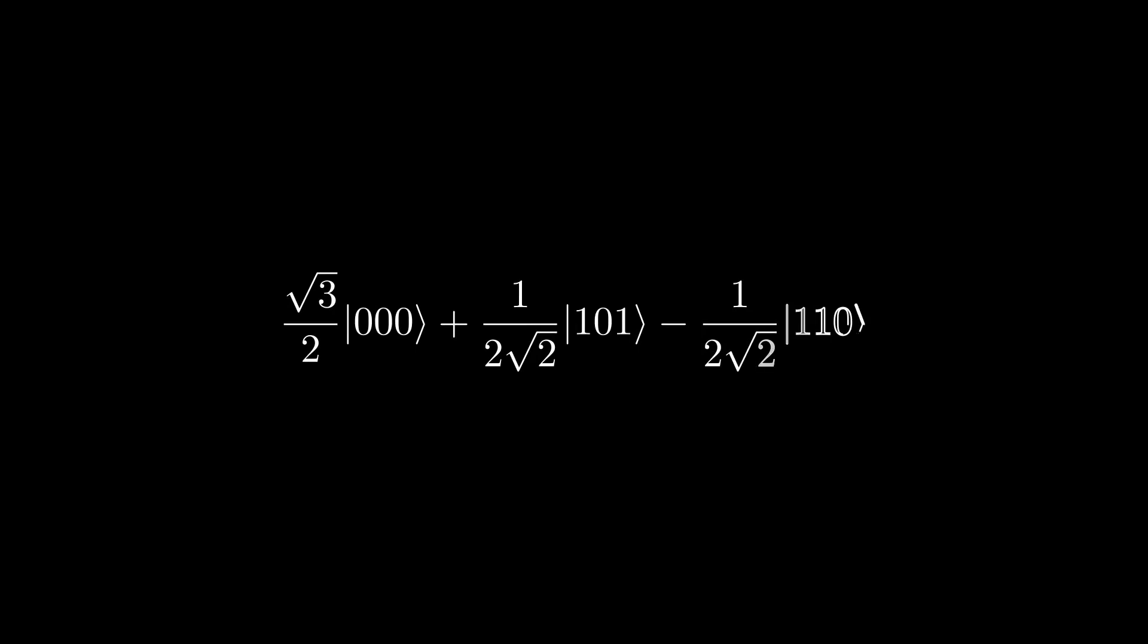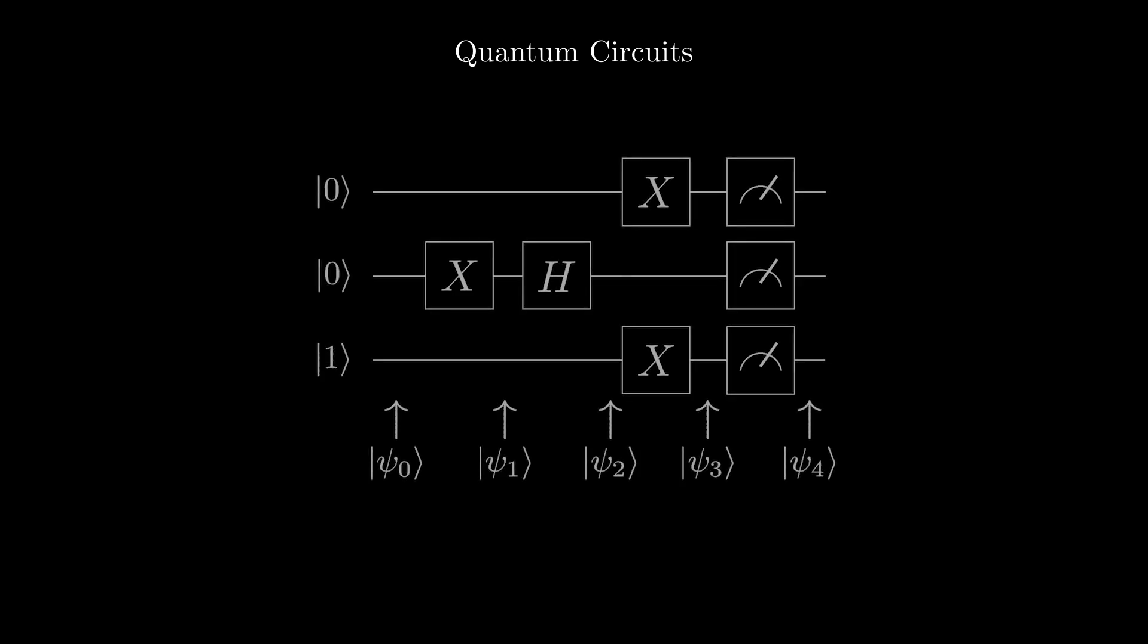This representation of qubits is great, but what if we wanted to apply a gate to a certain qubit? How would we indicate that we wanted to, let's say, apply an x-gate to the second qubit in this state? For this, we'll use a diagram called the quantum circuit. Here is an example of one.